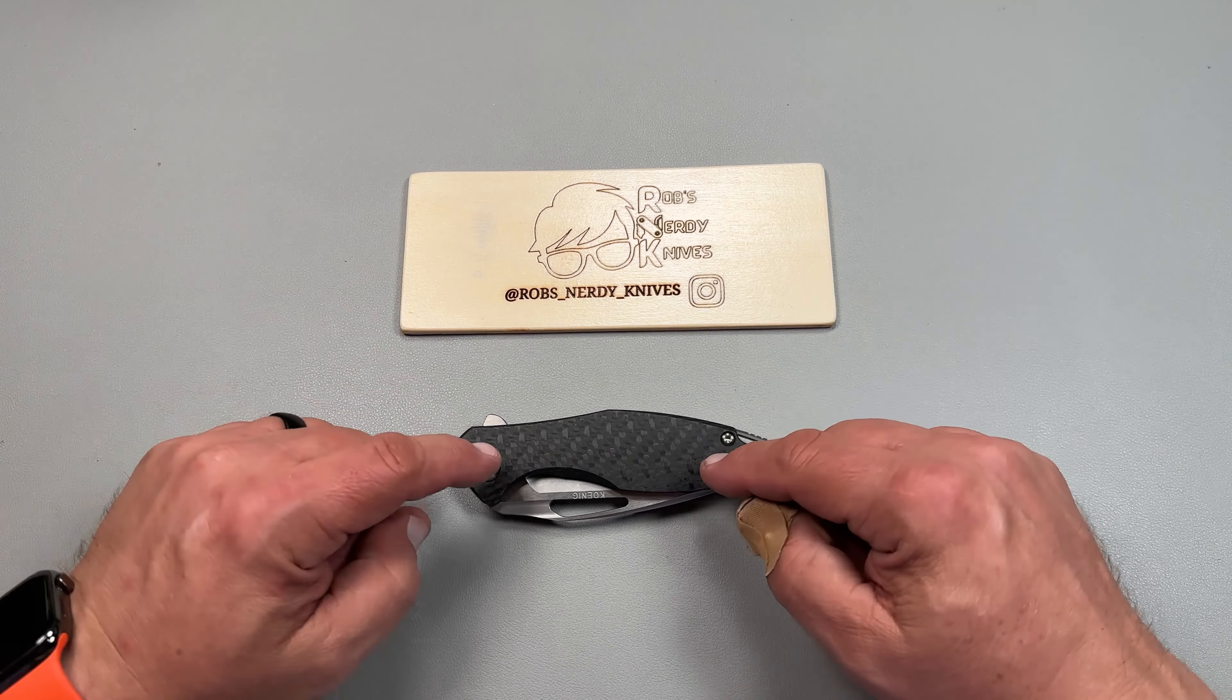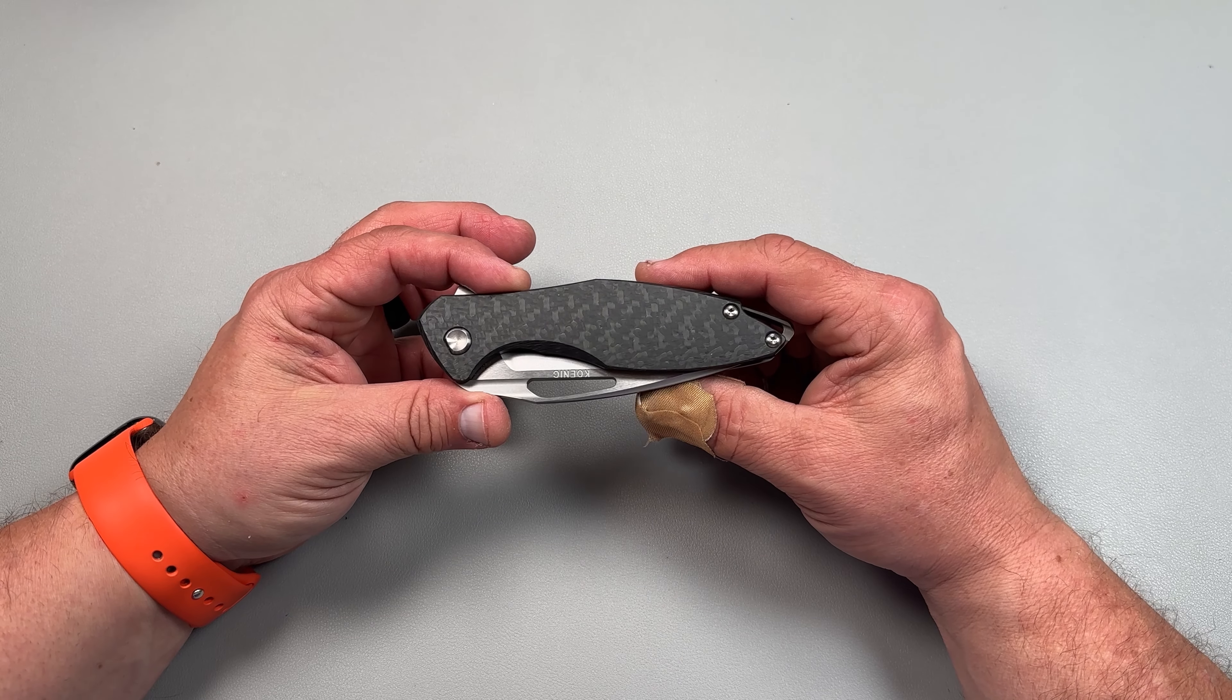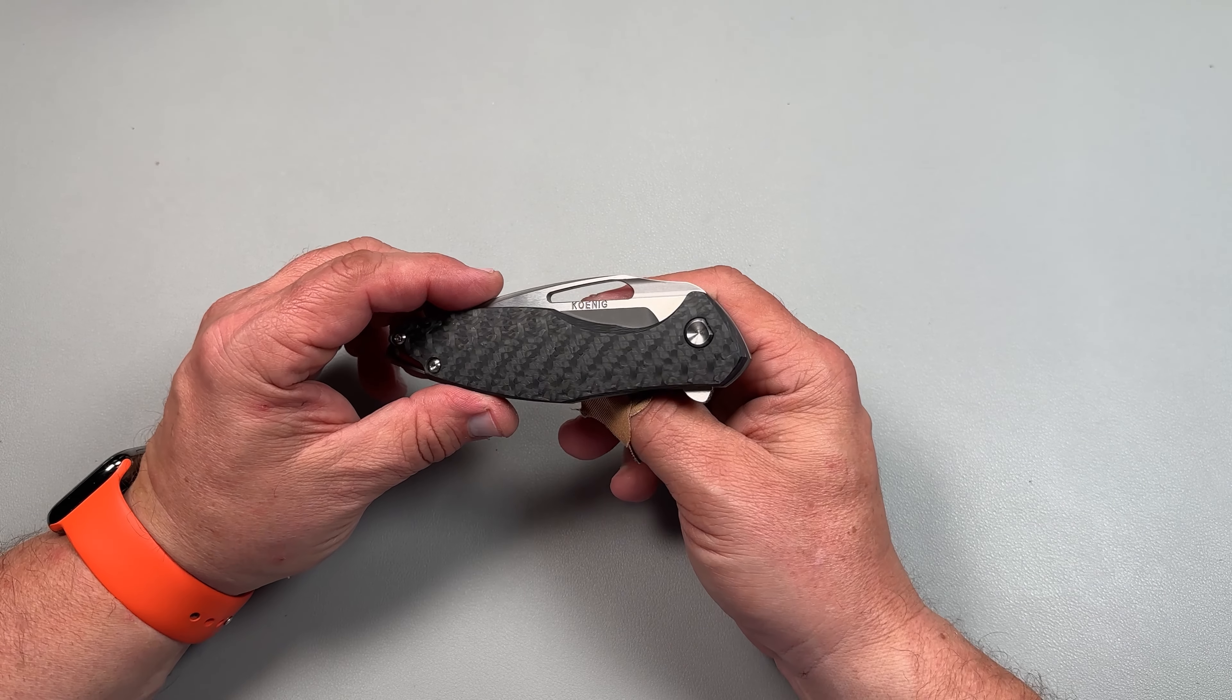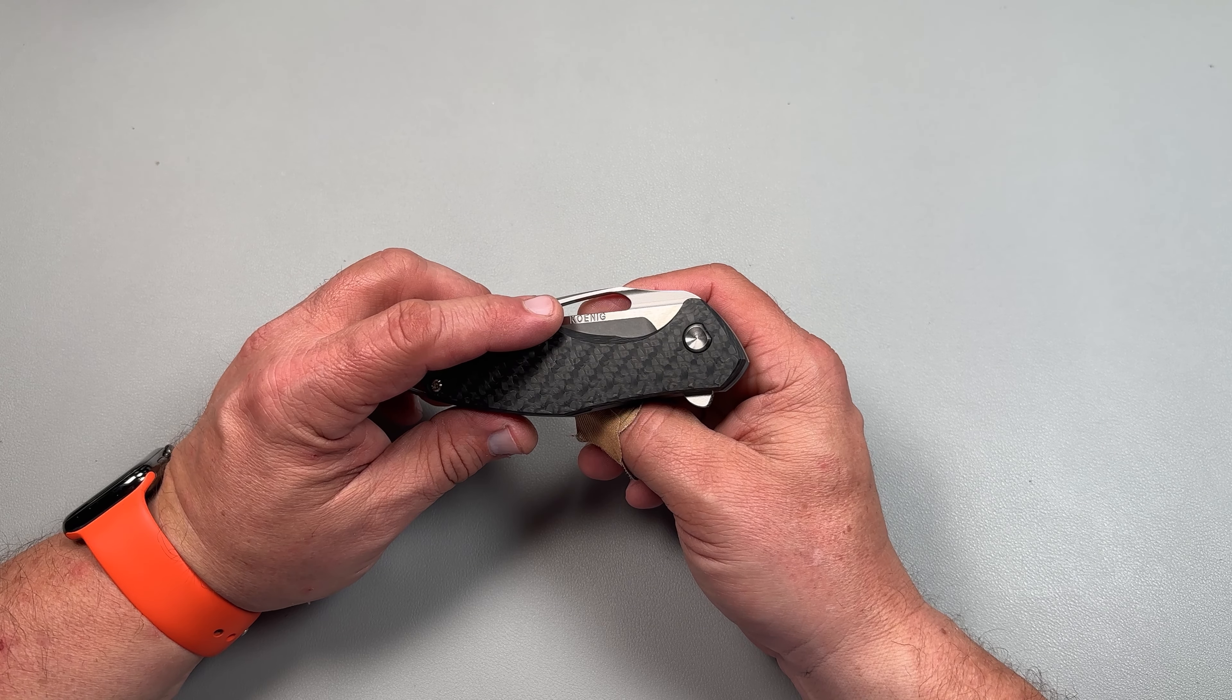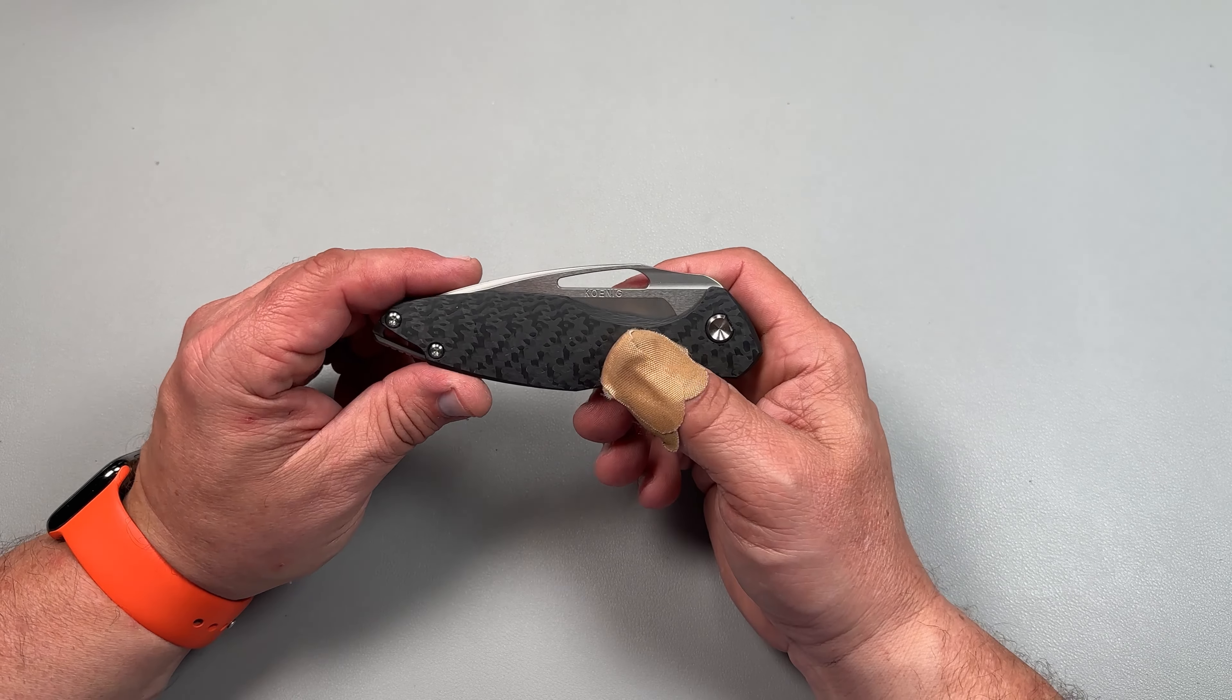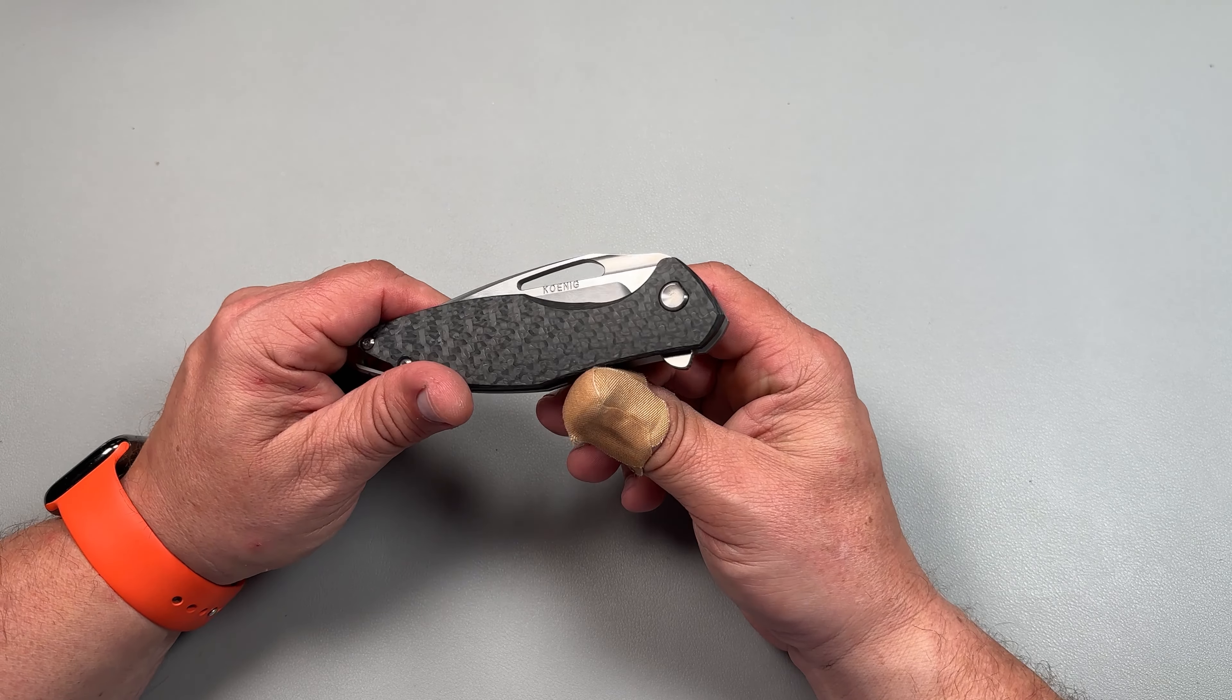So the name of this knife is the Koenig Arius. This is the first iteration of Arius. The one that's pretty popular right now is the Mini Arius, which is a much smaller version of this. I actually owned that and sold it, but this is the full version. I found this one on DLT Trading. This particular design is between Koenig and Schwartz. Schwartz and Koenig came up with this design together. I love this design. I think it's really wonderful.